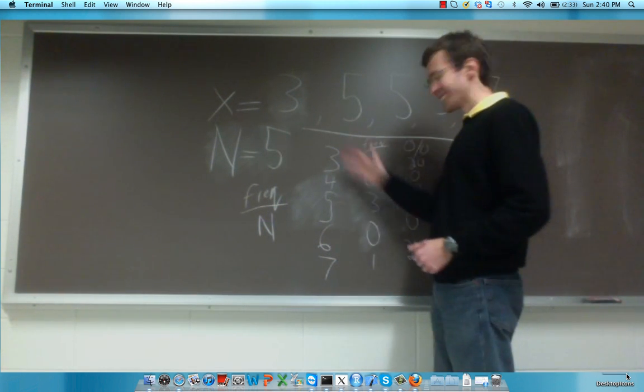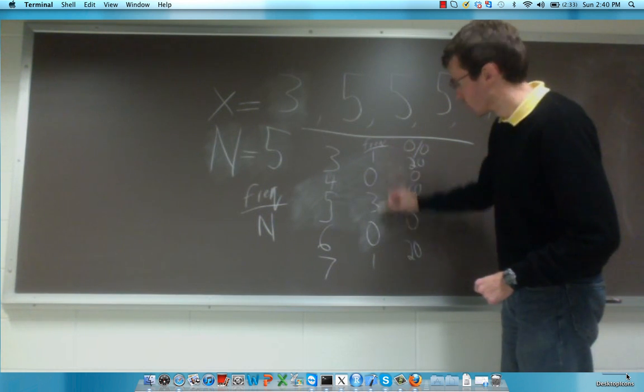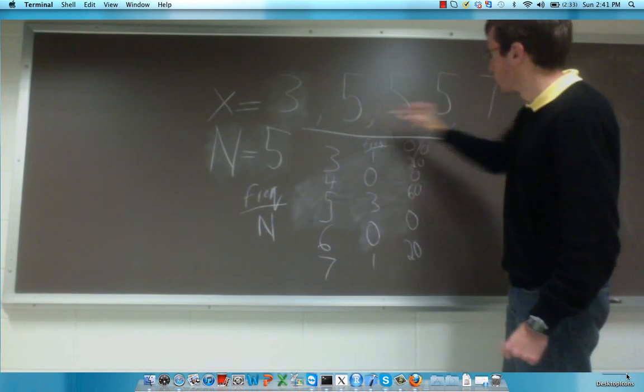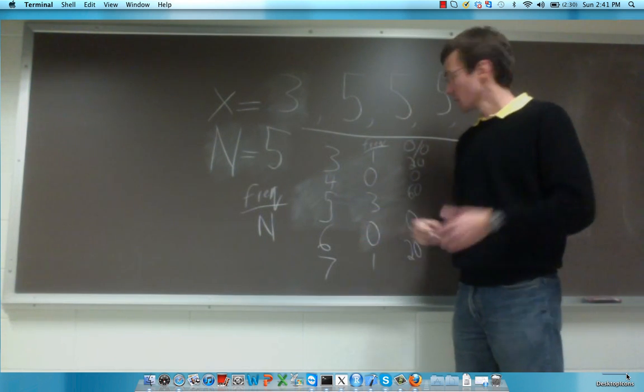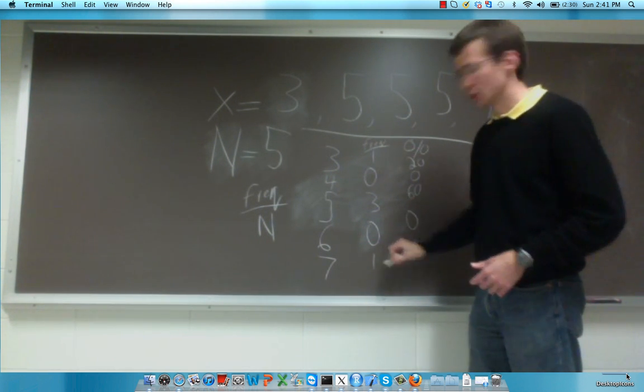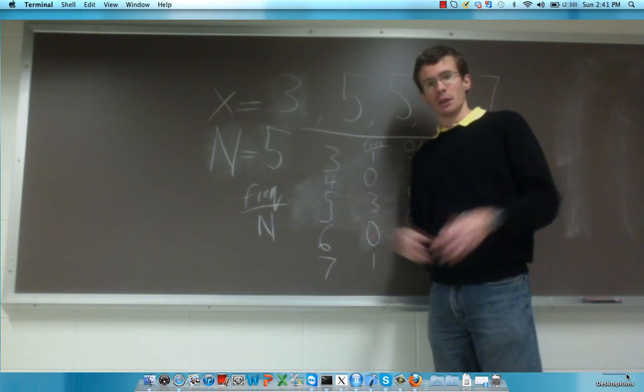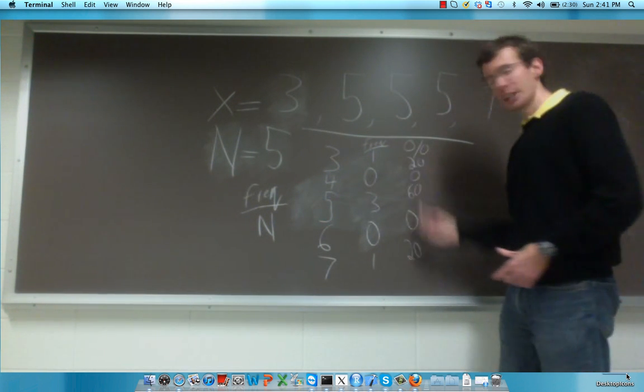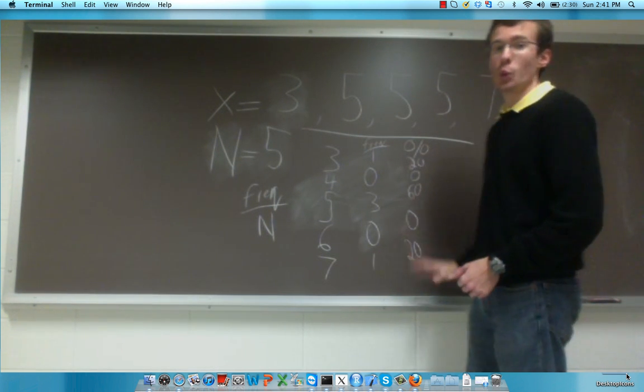To make sure that you've done this table correctly, you should do two checks. One is to make sure that all of your frequencies add up to the total number of observations. We should be accounting for every observation. So 1 plus 3 plus 1 is 5, and there were indeed 5 observations. The second check, if you made a percentage column, is to make sure that the percentages add up to 100%.